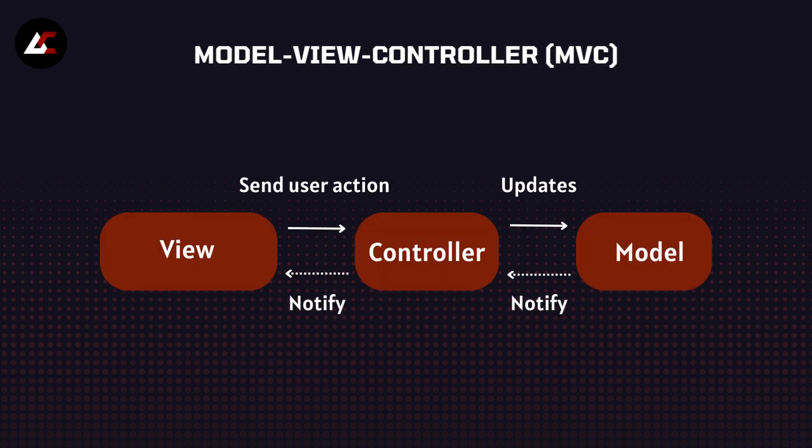For example, imagine you are building a to-do list app. The Model would contain the tasks and their status. The View would display the tasks. And the Controller would manage user interactions like adding and marking tasks as done.